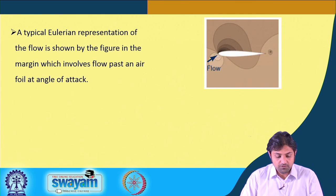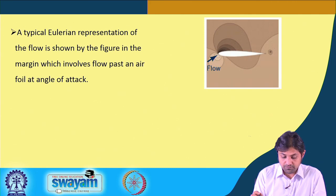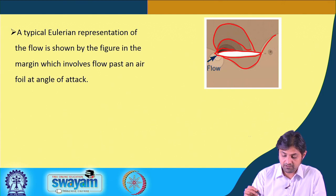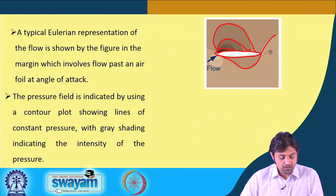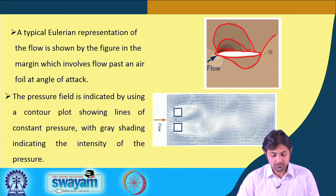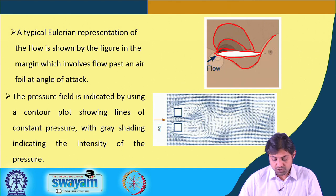A typical Eulerian representation is shown by the flow past an airfoil at an angle of attack. This is the airfoil object, and the contours represent the flow properties. The observer is at a fixed point in space — this is Eulerian in nature. The pressure field is indicated by a contour plot showing lines of constant pressure, with grey shading indicating intensity.